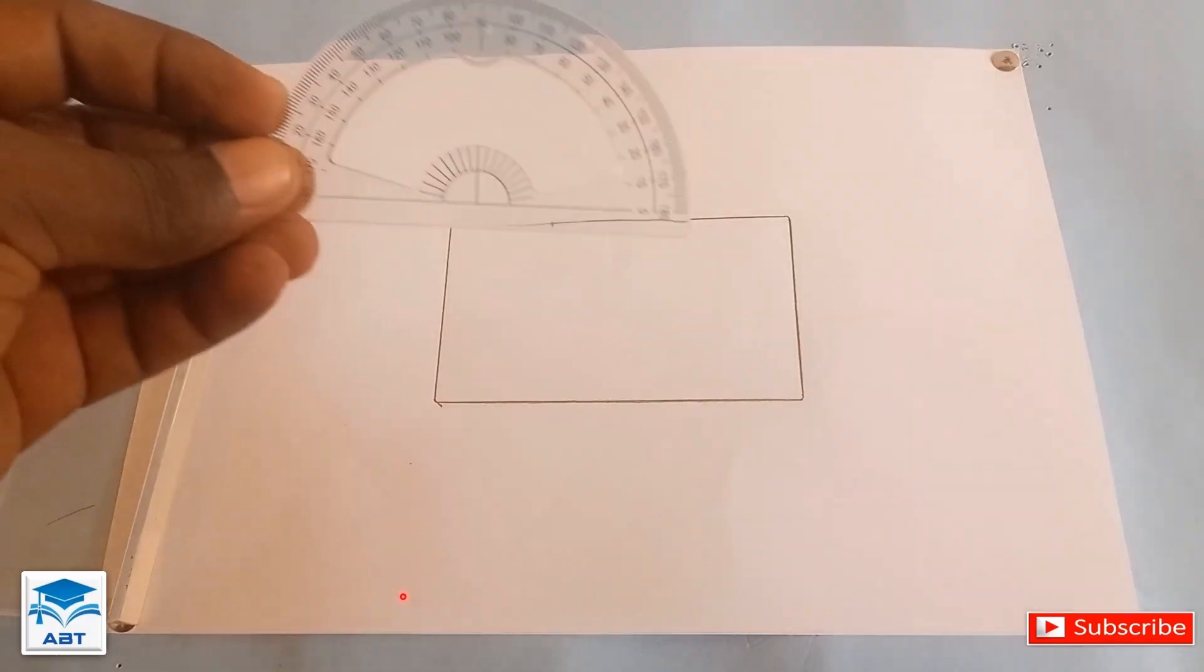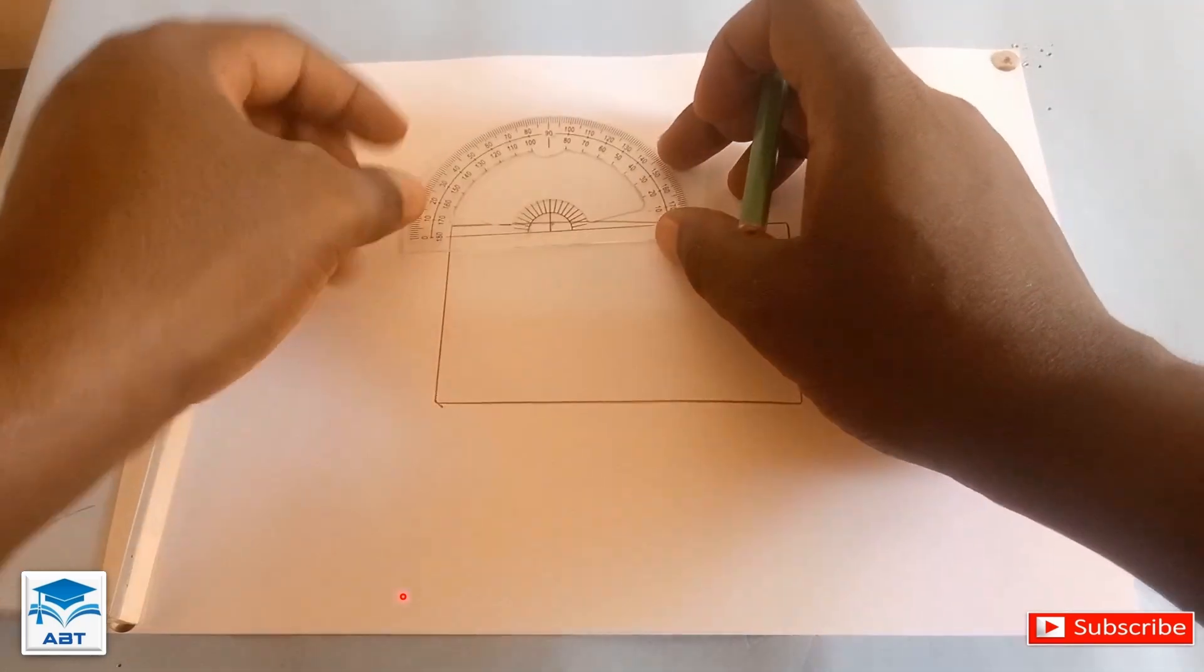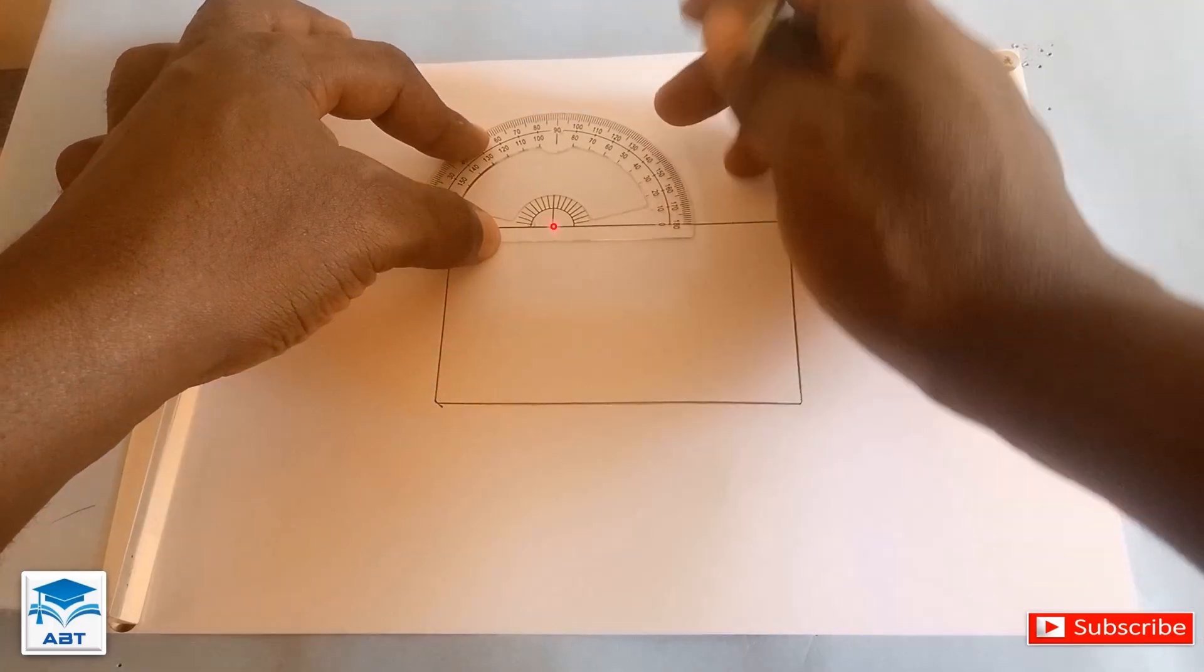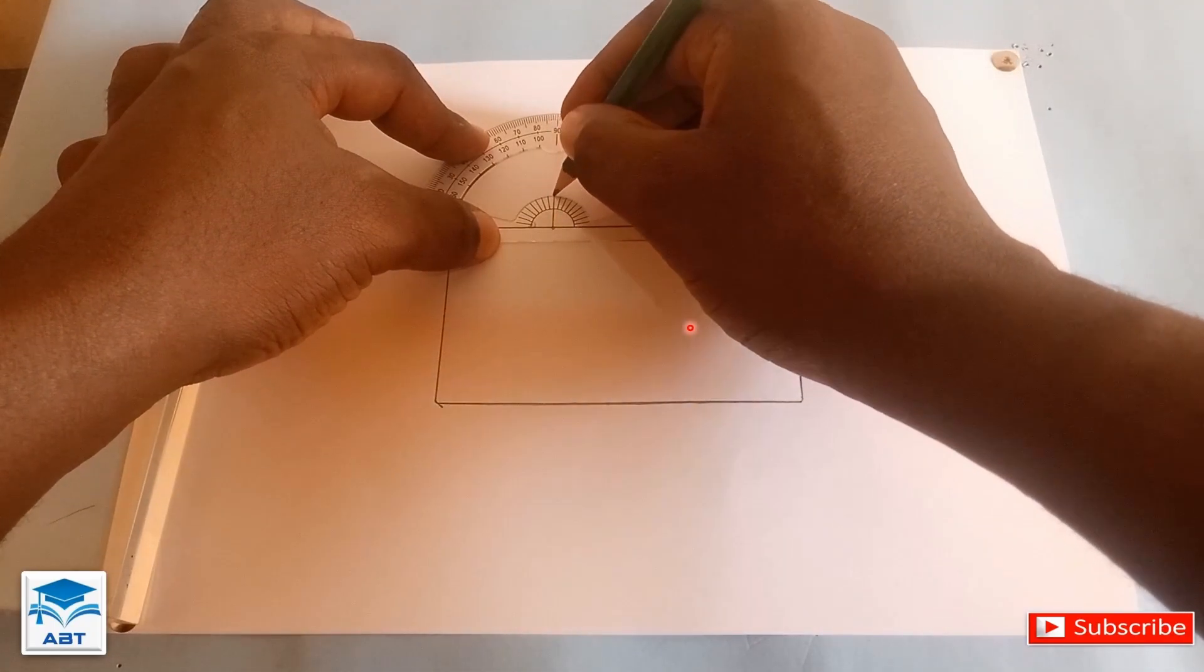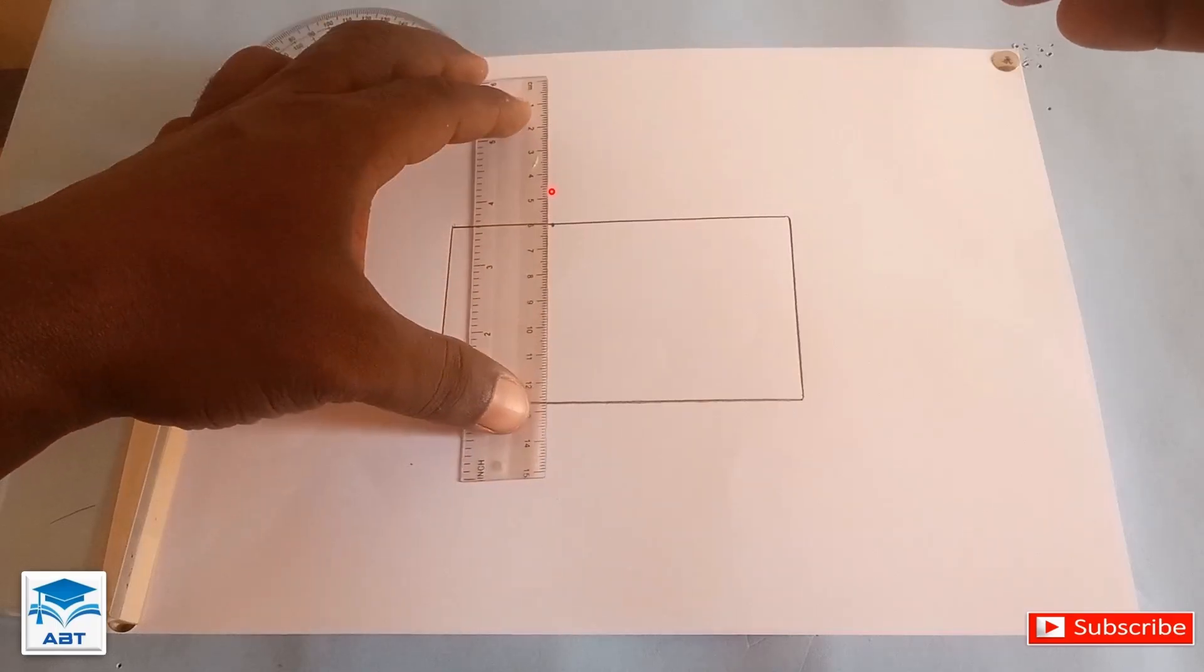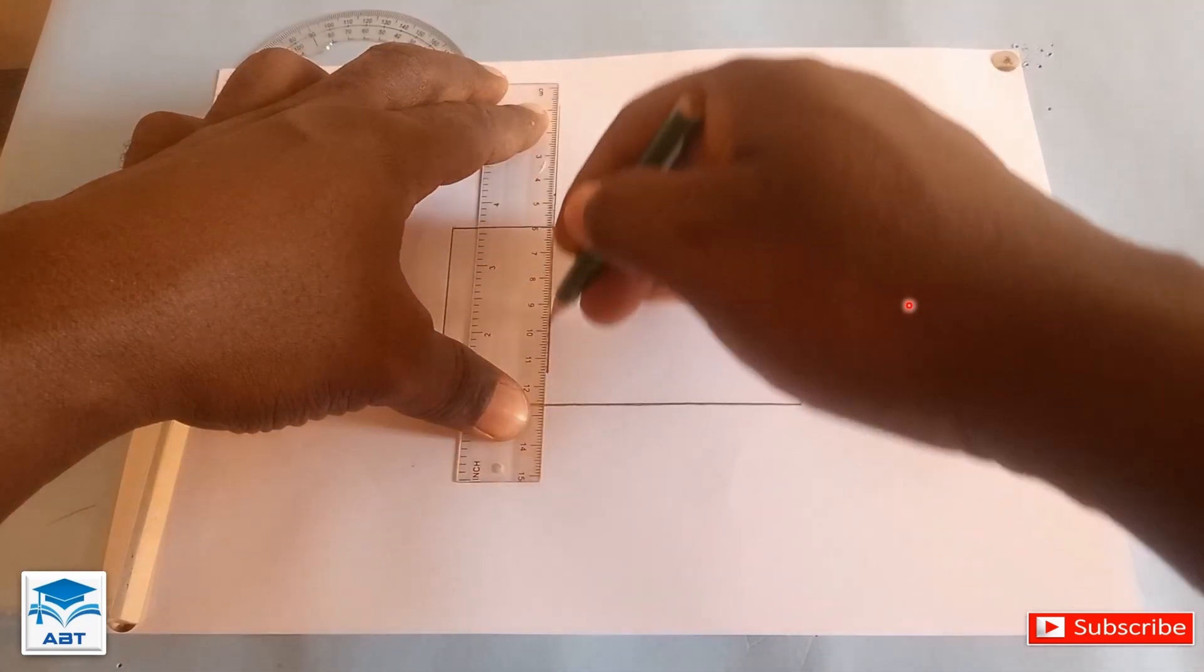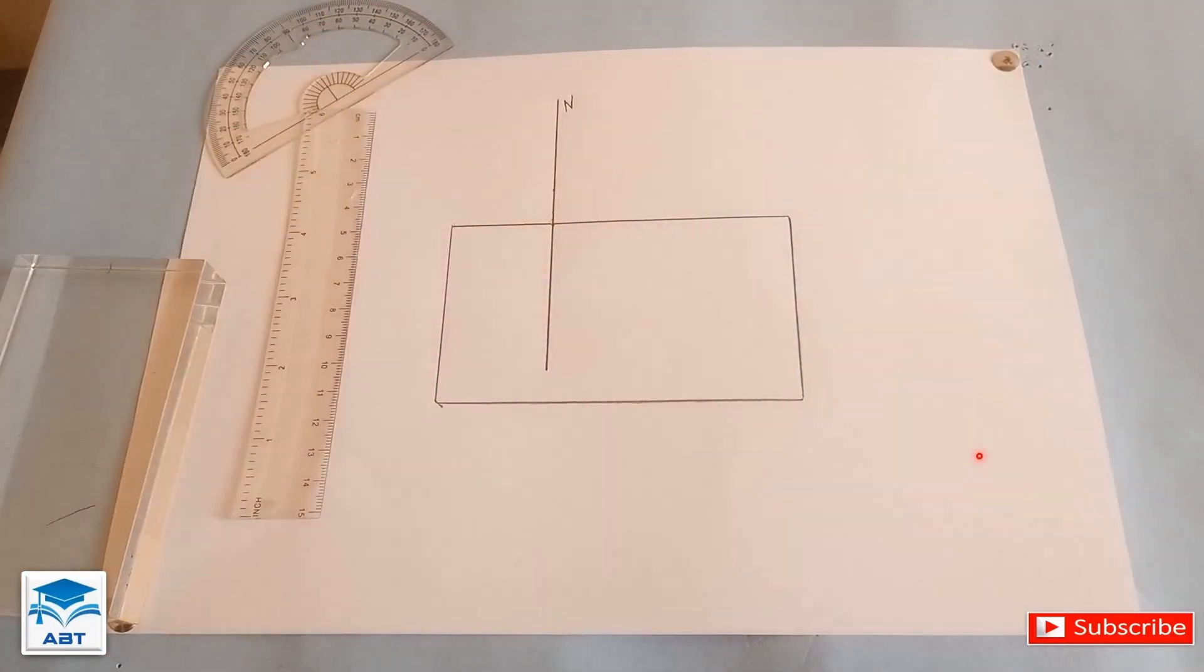And we draw a perpendicular line passing through this point. So we put the baseline of the protractor on the outline and the point here on the point of incidence. So we draw a straight line passing through this point and the point of incidence, and that line is perpendicular to the outline and it's known as the normal.